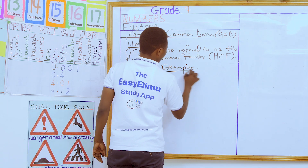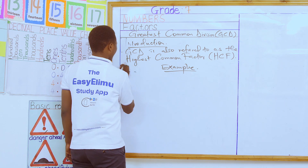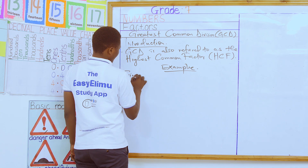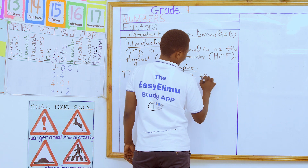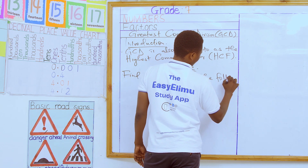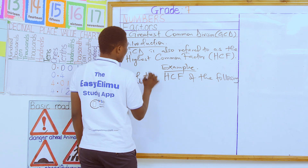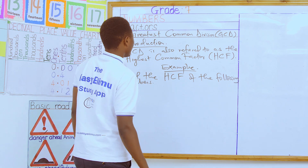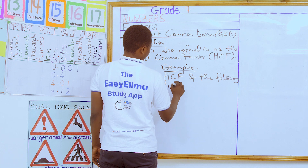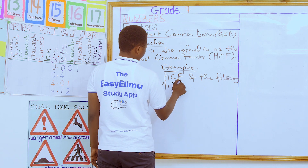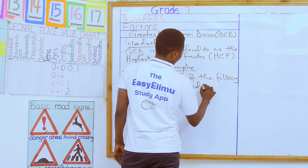An example: find the HCF of the following numbers — 4, 12, and 36.